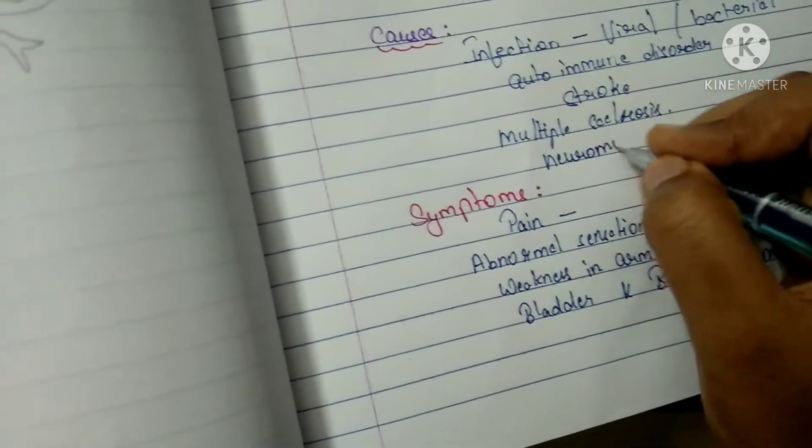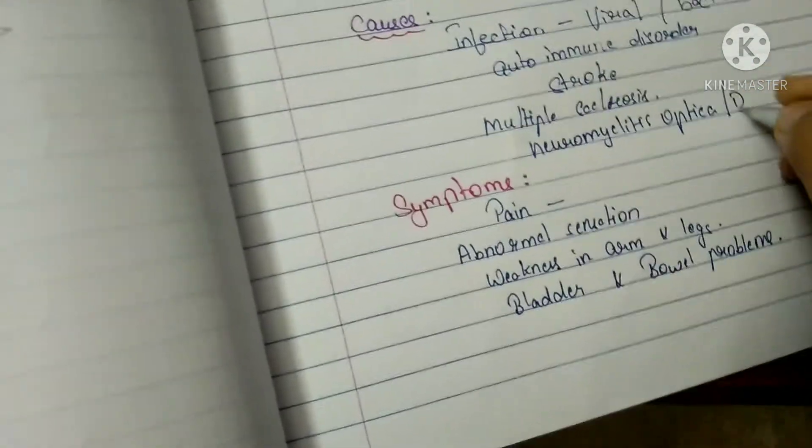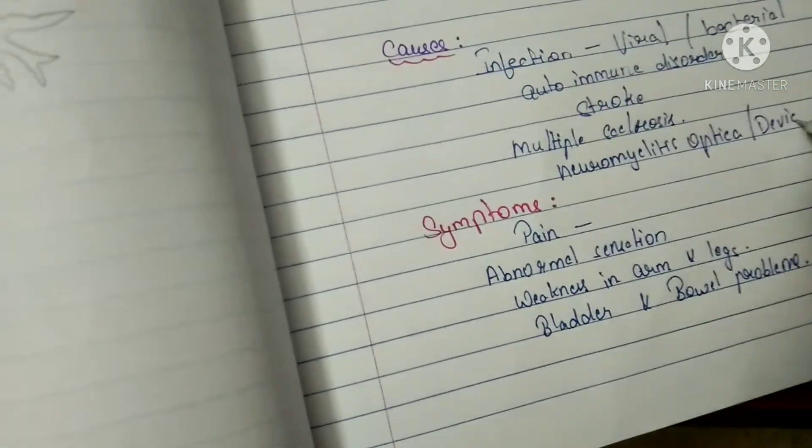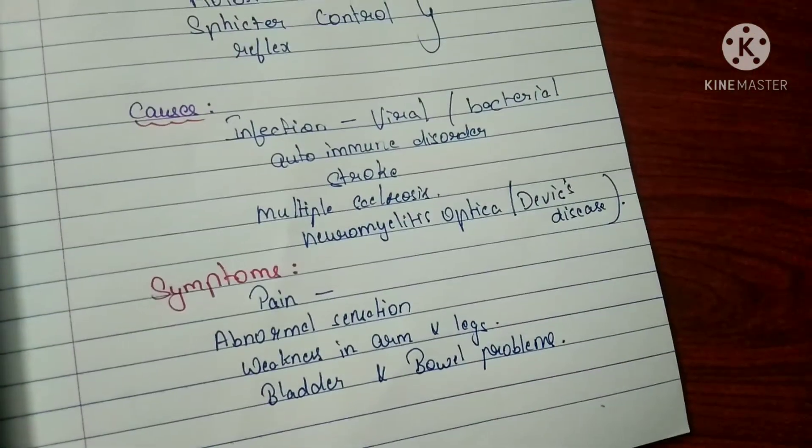In the causes, we also have neuromyelitis optica. It is an inflammatory condition where the myelin is also lost around the spinal cord, and it also affects the nerve of the eye. So not only affecting the spinal cord but also the eye.